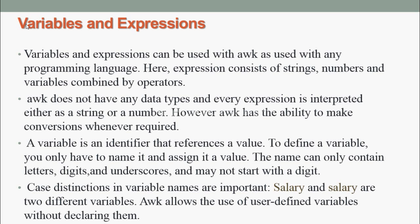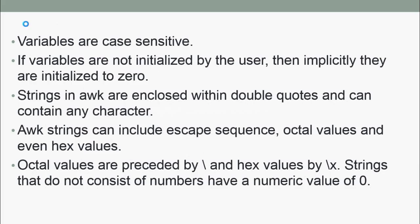Case distinctions in variable names are important. As you can see here, salary with a capital letter and one with a small letter are two different variables. AWK allows the use of user-defined variables without declaring them. Variables are case sensitive. If variables are not initialized by the user, then implicitly they are initialized to zero. Strings in AWK are enclosed within double quotes and can contain any character. AWK strings can include escape sequences, octal values as well as hex values. Octal values are preceded by forward slash, and hex values are preceded by forward slash followed by x. Strings that do not consist of numbers have a numeric value of 0.